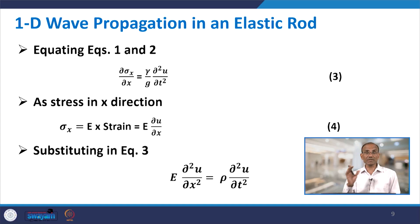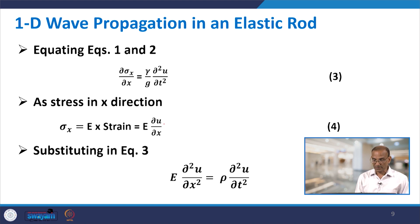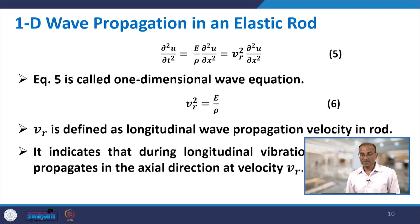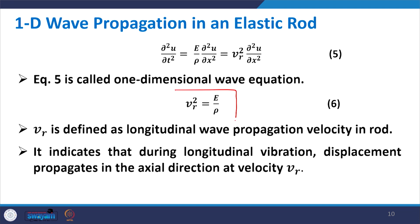Replacing σx with Young's modulus E times strain (E·∂u/∂x), and rearranging, we end up with the wave equation where ∂²u/∂t² = Vr²·∂²u/∂x², and Vr² = E/ρ. Here Vr is the longitudinal wave propagation velocity in the rod, which depends on Young's modulus E and mass density ρ — the two material properties governing this wave velocity.